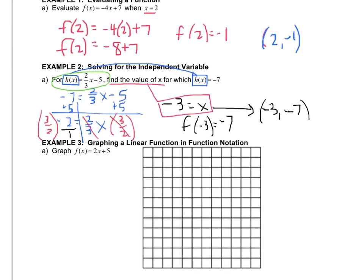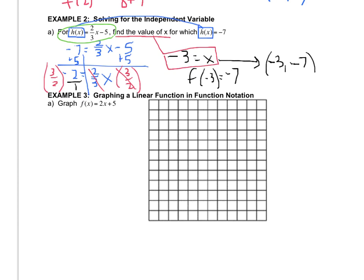Alright, graphing a linear function is the same as graphing y equals mx plus b, because f of x is the same as y. So we're basically graphing y equals 2x plus 5, but instead we're writing it as f of x equals 2x plus 5. So the concept is the same. You're just changing the way that you notate it. In order to graph, we need the slope and the intercept.